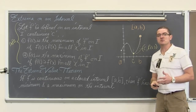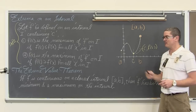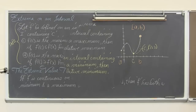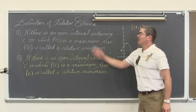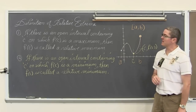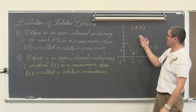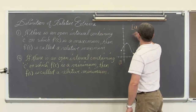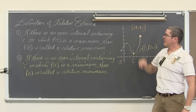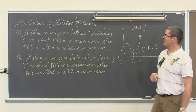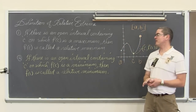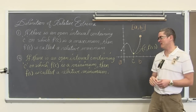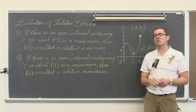Let's make sure that we understand the definitions of relative maximums — I kind of already verbally talked about it, and then we will go on to some examples. We have the definition of relative maximum: if there is an open interval containing c on which f of c is a maximum, then f of c is called a relative maximum. If there is an open interval containing c on which f of c is a minimum, then f of c is called a relative minimum.